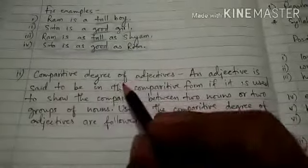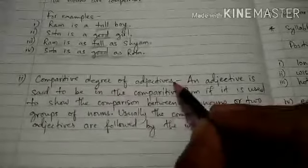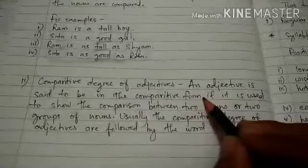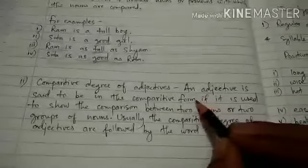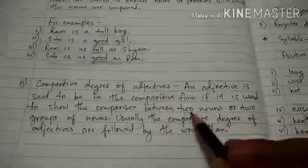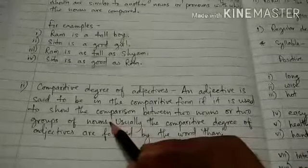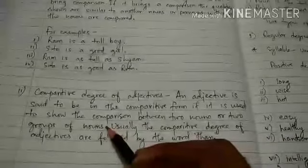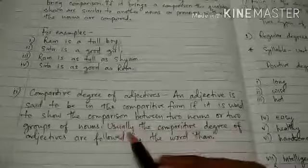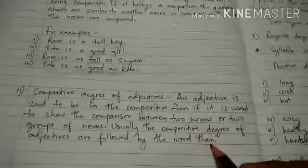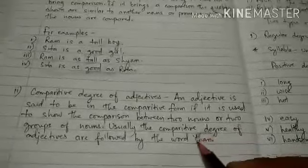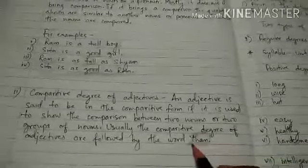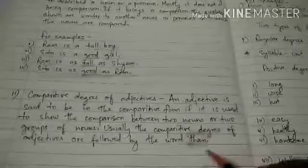Now, another degree of comparison: comparative degree of adjectives. An adjective is said to be in the comparative form when it is used to show the comparison between two nouns or two groups of nouns. Usually, the comparative degree of adjectives is followed by the word 'than.' Whenever we use the comparative degree of adjectives, the word 'than' is used after the adjective.